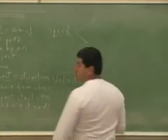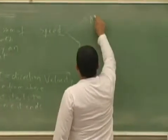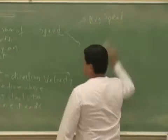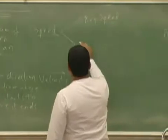Now, speed we're going to divide into two parts. We're going to have average speed, and we're going to have instantaneous speed.